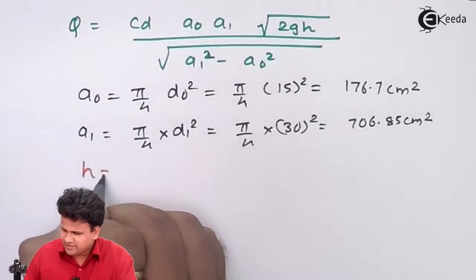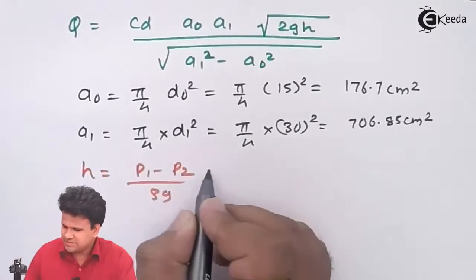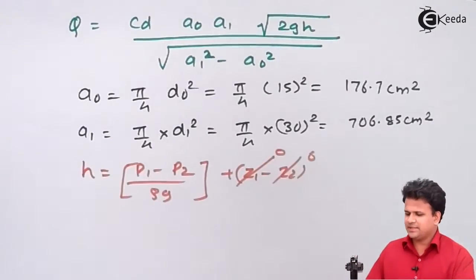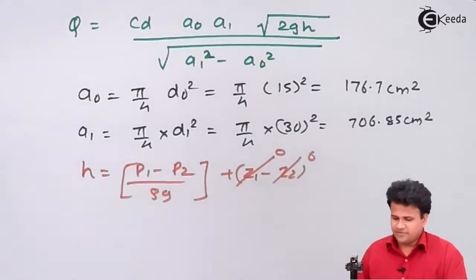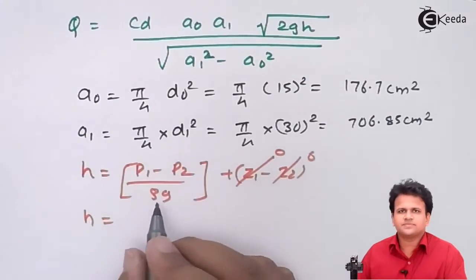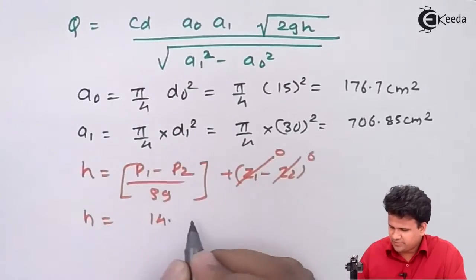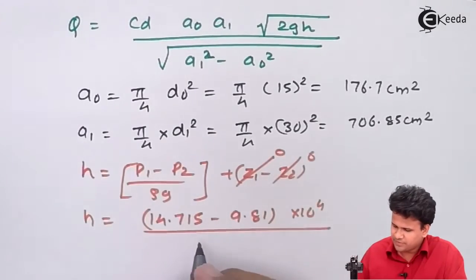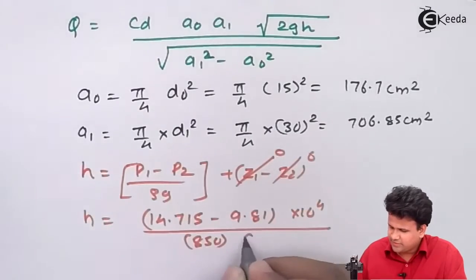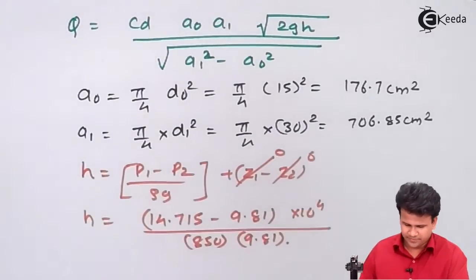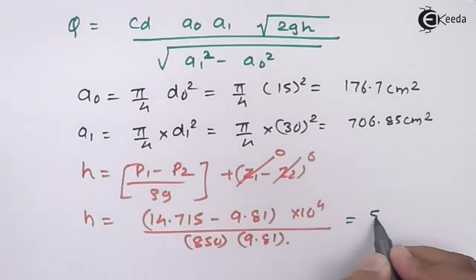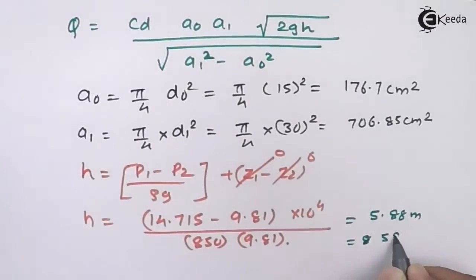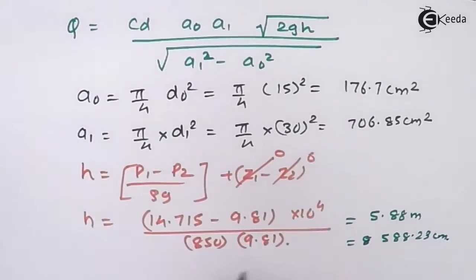The value of h equals (p1 − p2)/(ρg) + (z1 − z2). Both z terms are zero for a vertical orifice meter, so h = (p1 − p2)/(ρg) = (14.715 − 9.81) × 10⁴ / (850 × 9.81), which gives h = 5.88 meters or 588.23 centimeters.